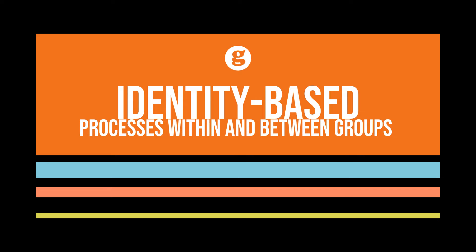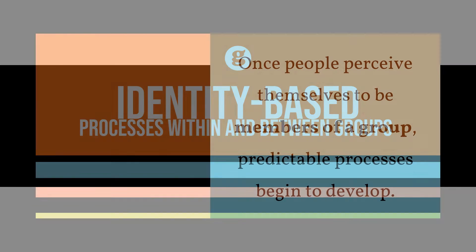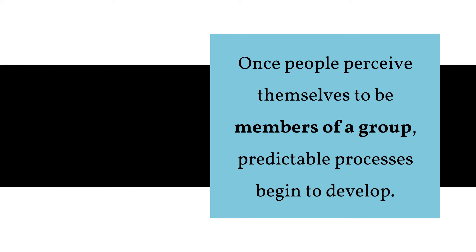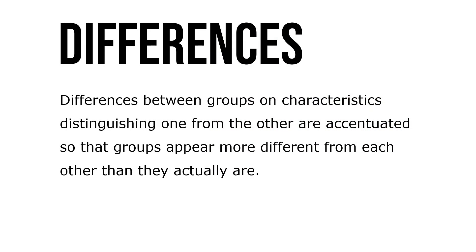Let's take a look at identity-based processes within and between groups. Once people perceive themselves to be members of a group, predictable processes begin to develop. Differences between groups on characteristics distinguishing one from the other are accentuated, so that other groups appear to be more different from each other than they actually are.